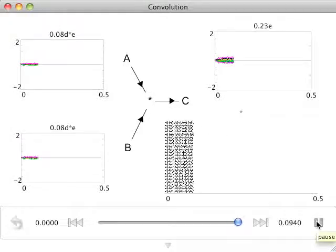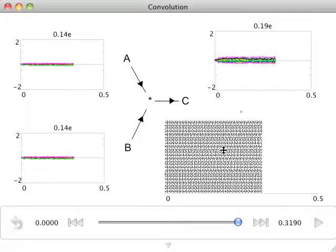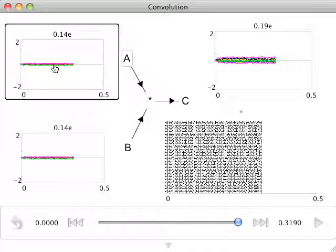When I run this simulation, we will notice that we have a new kind of graph here. We call this a semantic pointer graph. Instead of showing the value of the vector, the semantic pointer graph shows the similarity between whatever is being represented in population A and any of the valid vocabulary items for the network.